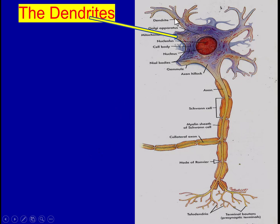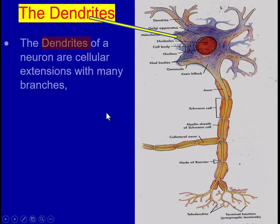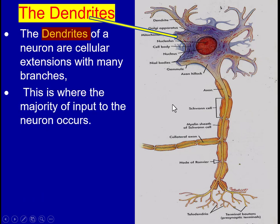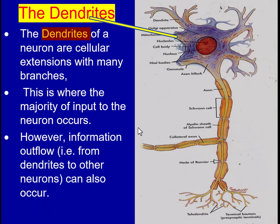The dendrites are the branching structures that originate from the body or soma. The dendrites of a neuron are several extensions with many branchings. This is where the majority of input to the neuron occurs — the point at which the neuron receives or collects information from other neurons. Information flow from dendrite to other neurons can also occur, so the dendrite is a two-way structure: it receives and also sends information to other neurons.